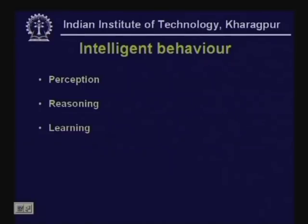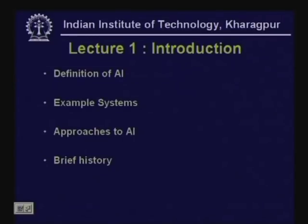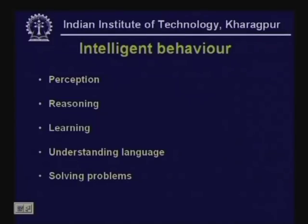Let us look at some of the basic intelligent behaviors in human beings: perception — being able to see, hear, and process sensory information — reasoning with the information that we have, learning for new situations, understanding and communicating in natural language, and solving problems. These are examples of some of the things that we want our AI systems to be able to do.